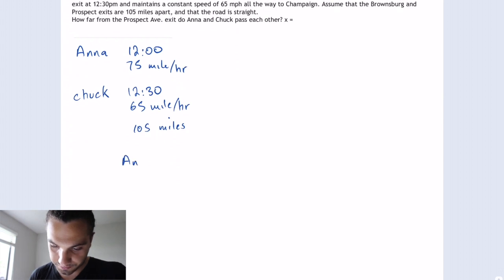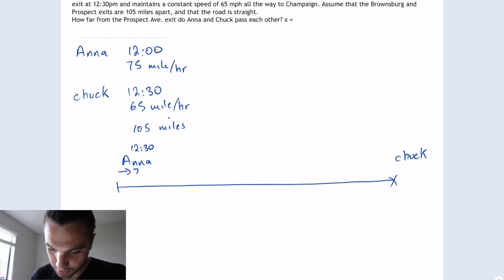So Anna starts from here, and this is Chuck. So Anna starts moving at 75 miles per hour at 12:30. And Chuck is going the opposite way at 65 miles per hour. And the whole distance is 105.